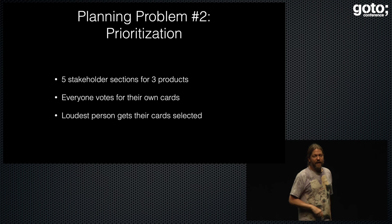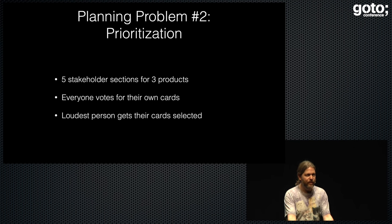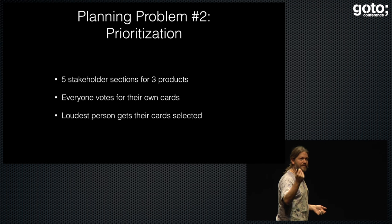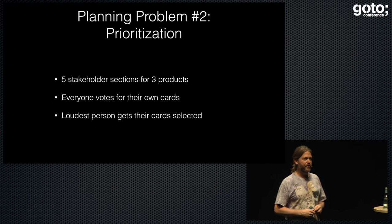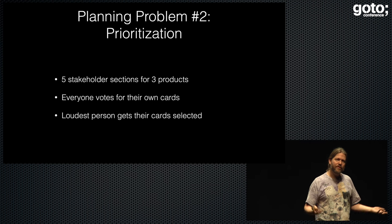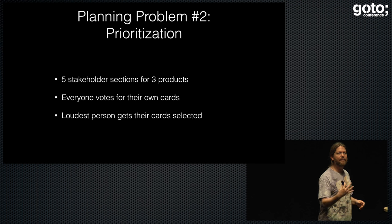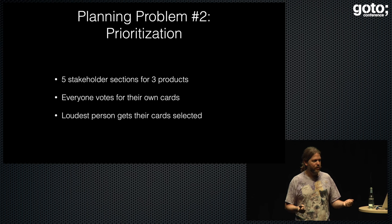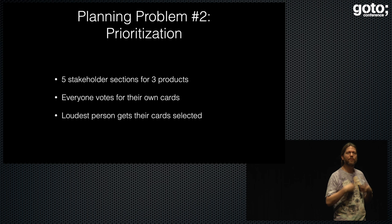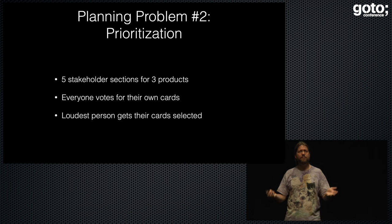So we have five stakeholders and three products. Everybody would have our two-week meeting, everyone would bring their cards, and everyone would vote. Generally the loudest person gets their cards prioritized — and in general that's sales. They're the ones who bring money in and can say we think this is going to make us a lot of money. That's not a bad thing, but they tend to be the loud ones and get their stuff prioritized.